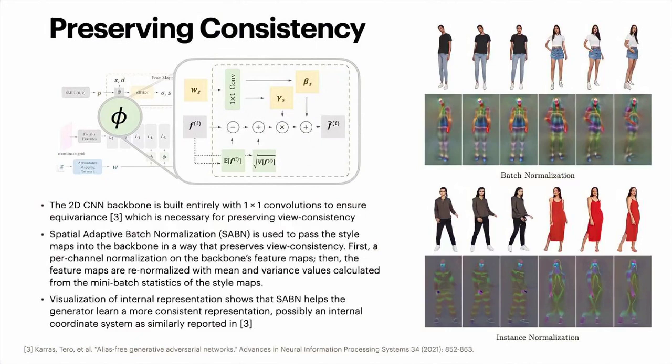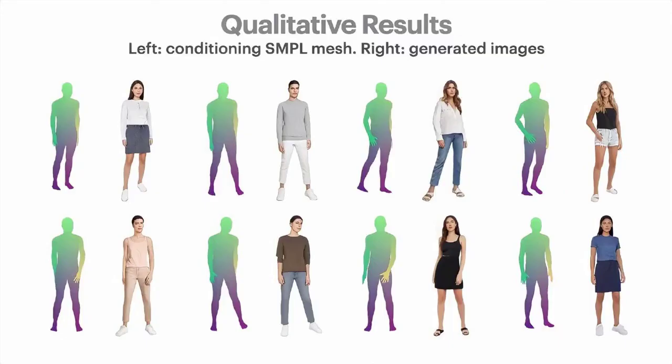Visualization of internal representations shows that SABN helps the generator learn a more consistent representation, possibly an internal coordinate system, as similarly reported in prior work. For qualitative results, each case shown depicts the conditioning SMPL mesh on the left and the generated images on the right.